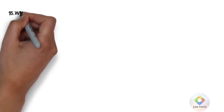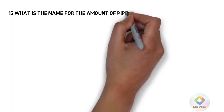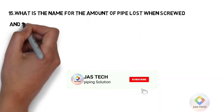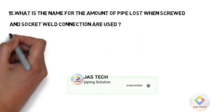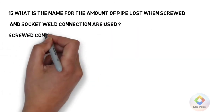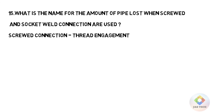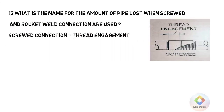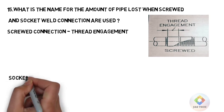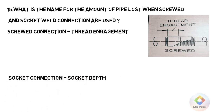Q15: What is the name for the amount of pipe lost when screwed and socket weld connections are used? For screwed connections, pipe loss is called thread engagement. For socket weld connections, pipe loss is called socket depth.